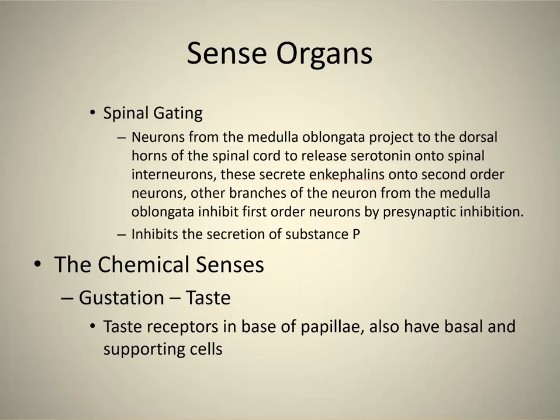Slide 13 is spinal gating. Neurons from the medulla oblongata project to the dorsal horns of the spinal cord. Now this is a descending pathway — not really a motor pathway, and most descending pathways are motor, but this one is actually an inhibitory pathway that's going to inhibit pain. I'm going to show you that in the next slide, after I first introduce the chemical senses.